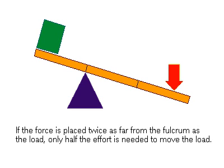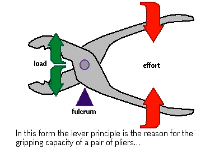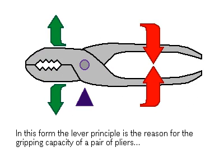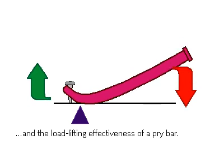This proportion is called mechanical advantage. An example of this lever arrangement is the gripping capacity of a pair of pliers and the powerful leverage of a pry bar.